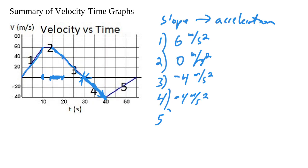In segment five, we're going from 40 all the way to zero. This is taking 15 seconds, so 40 over 15 is going to be 3 and 2 thirds meters per second squared. Notice this is a positive acceleration, but in this case we're actually slowing down — we're eventually going to be stopped. So that's our acceleration by finding slope.